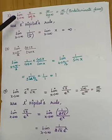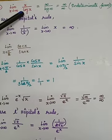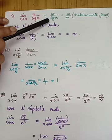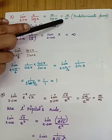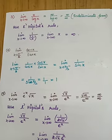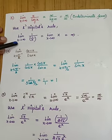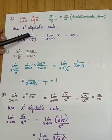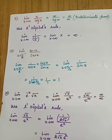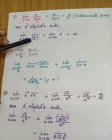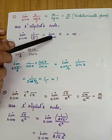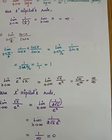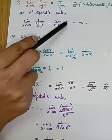Third problem: limit x→∞ of x/log x. Apply the limit: ∞/log∞ = ∞/∞, which is an indeterminate form. Apply L'Hôpital's rule: differentiate the numerator x to get 1, and differentiate log x to get 1/x. So 1/(1/x) = x. Apply the limit as x→∞: x→∞. The limit tends to infinity.